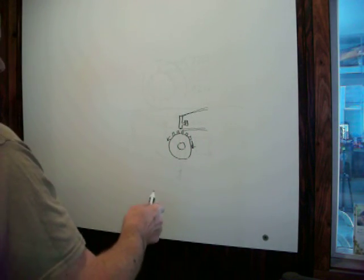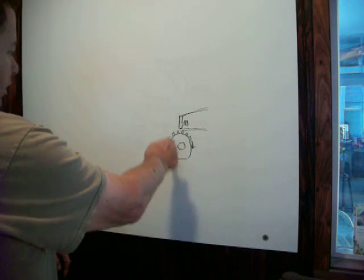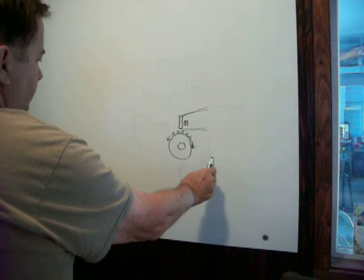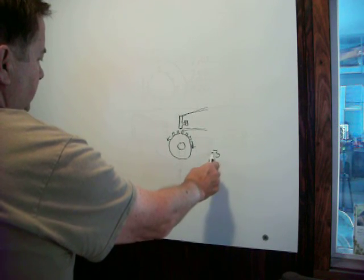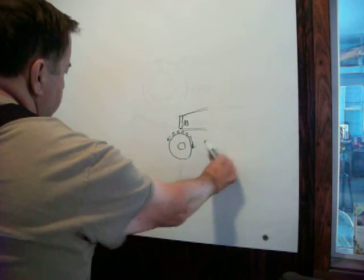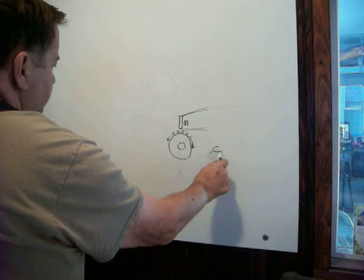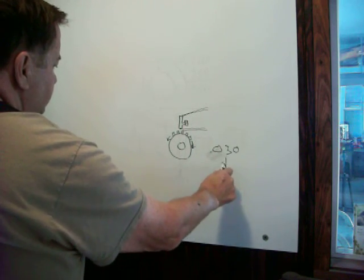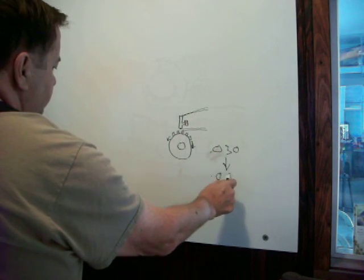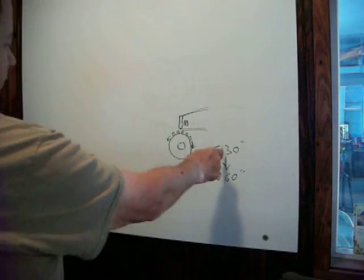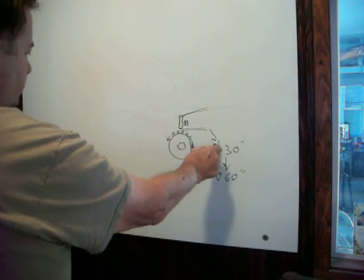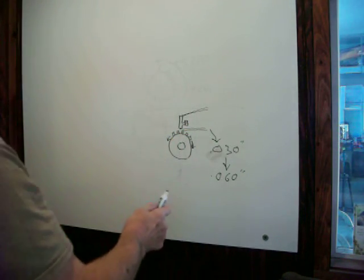Doing some research, I discovered that on a Hall effect sensor, the ideal distance of air gap is somewhere between 30 thousandths and 60 thousandths of an inch. Somewhere between 30 thousandths and 60 thousandths is what this air gap is. Now here's the thing.